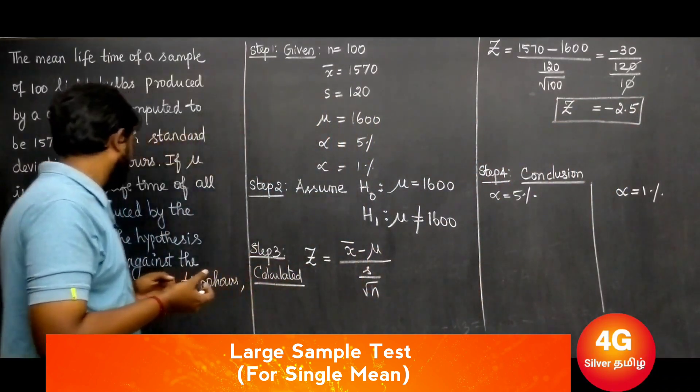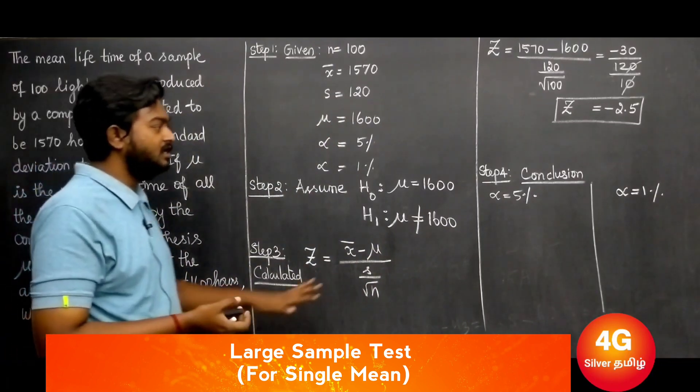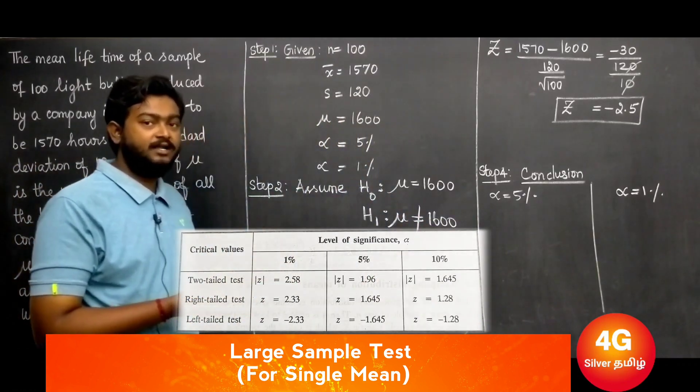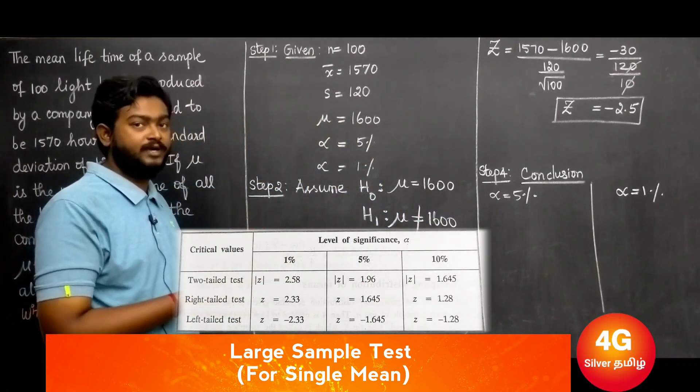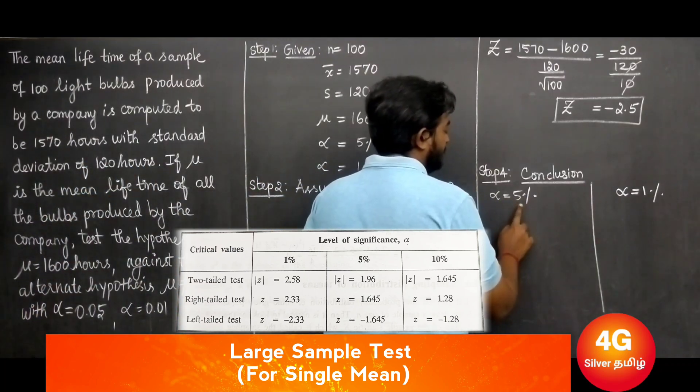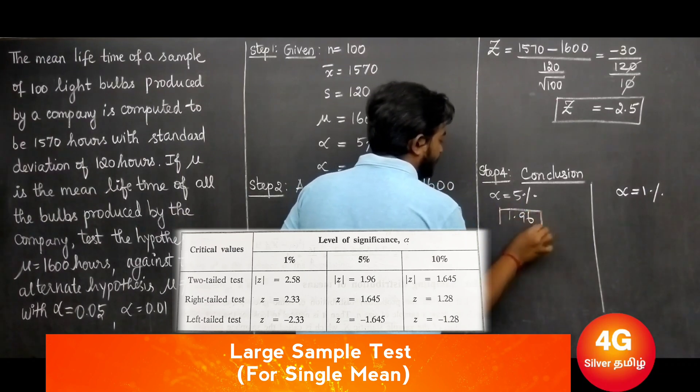For alpha 0.05, that is 5 percent, the table value is 1.96. This is the table value.